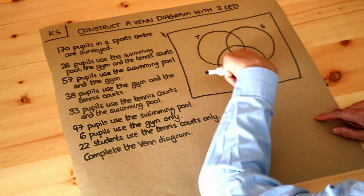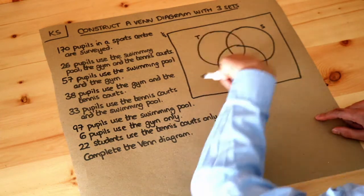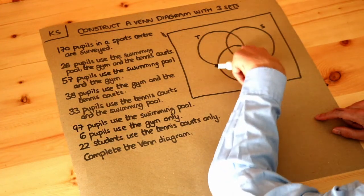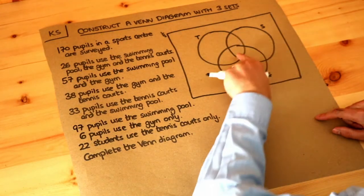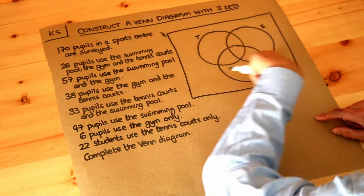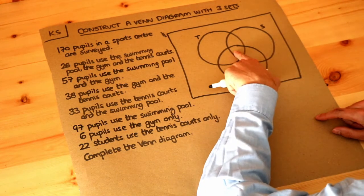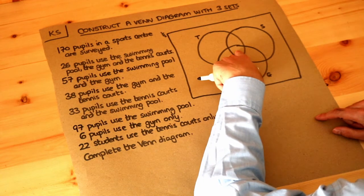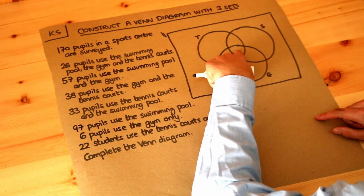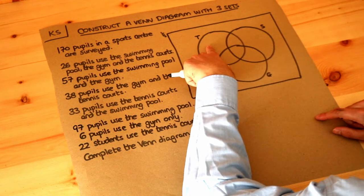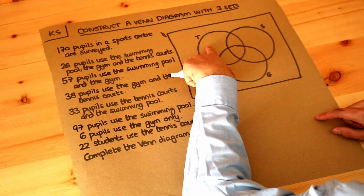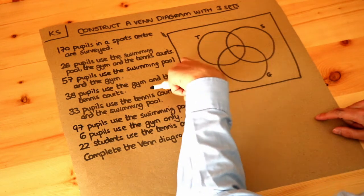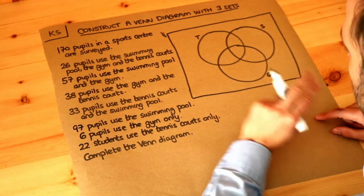This region here is the overlap of the T circle and the S circle, so that represents students who use both the tennis courts and the swimming pool. The region in the middle is the overlap of all three circles — those students use the tennis courts, the swimming pool, and the gym. In this region that is only in the T circle, these are students who only use the tennis court. The region outside all circles represents students who don't use anything at all.